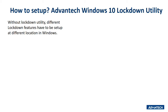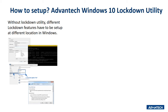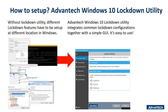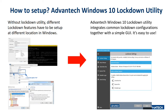However, every Lockdown feature has to be set up at different locations in Windows. For a non-software developer, it is quite confusing and time-consuming. The good news is that Advantech created a utility that compiles several common Lockdown features together — with just a few switches and selections, you can configure your Lockdown feature settings in seconds.